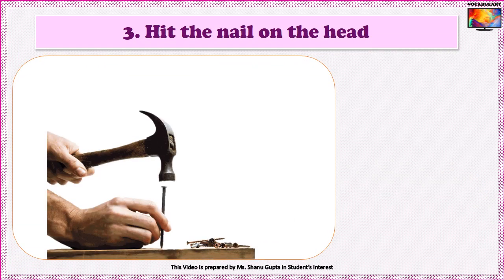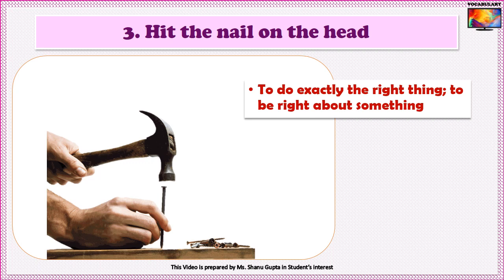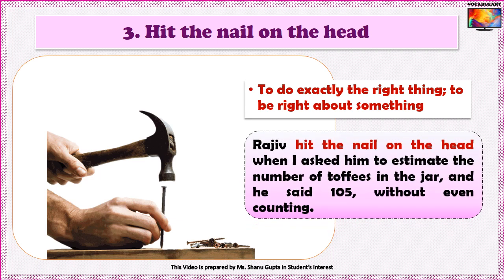Idiom number 3 is to hit the nail on the head. Hitting the nail precisely on the head is indeed a tough task, and being exact on this job is very important because that only will drive the nail through and prevent your fingers from getting hurt. So the figurative meaning associated with this phrase is to do exactly the right thing or to be right about something. An example: Rajiv hit the nail on the head when asked to estimate the number of toffees in the jar — he said 105 without even counting. The sentence means that Rajiv estimated the number and was exact about it.